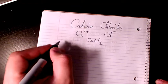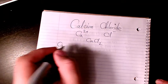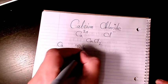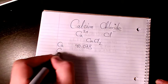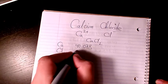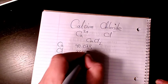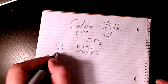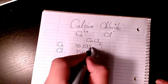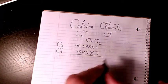we need to find the atomic mass of all elements. Calcium is 40.078 and chlorine is 35.45 times 2 because we have two atoms of chlorine and we have one calcium, so it's going to be